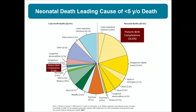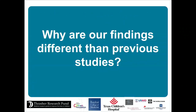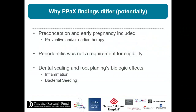Preterm birth is the leading cause of death for children under age five worldwide, with over a million children dying from preterm birth complications every year. Why are our findings different from previous studies? We started preconception — some participants weren't even pregnant yet. Participants didn't need to have periodontitis to enroll, and we used xylitol rather than dental scaling and root planing, which is a prebiotic unlikely to cause inflammation or bacterial seeding.